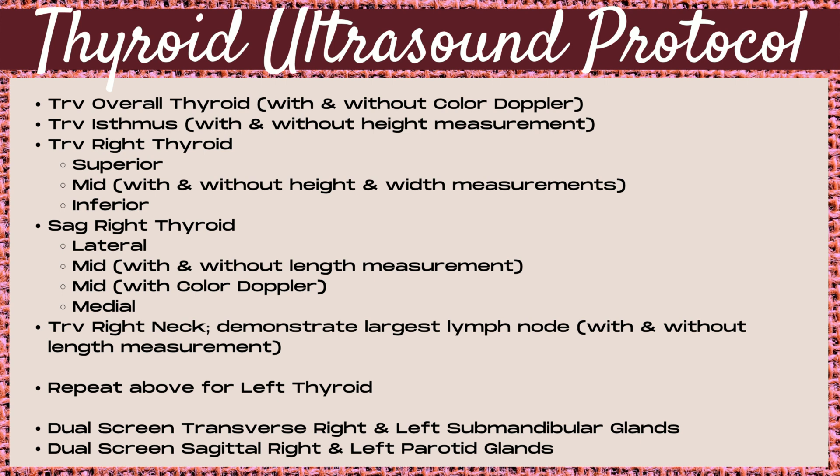Next, moving on to the transverse right neck, you want to take images demonstrating the largest lymph node with and without a measurement. You can do an AP measurement, a length measurement, or measure the lymph node in three dimensions — this will depend on the protocol of your site.